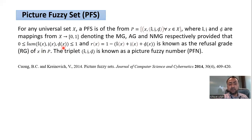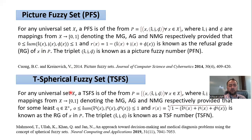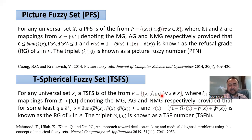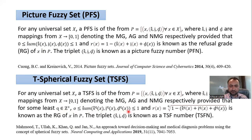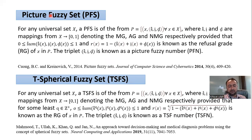To provide more independence, Mahmood et al. proposed two concepts — spherical fuzzy sets and T-spherical fuzzy sets — back in 2019. For any universal set X, a T-spherical fuzzy set has triplets of the form (S, I, D), where S, I, and D denote the membership, abstinence, and non-membership grades respectively. All values must lie between 0 and 1, and the sum of their Q-th powers must lie between 0 and 1, where Q belongs to positive integers. If Q equals 2, the structure reduces to Pythagorean fuzzy sets; if Q equals 1, it becomes picture fuzzy sets. Thus, T-spherical fuzzy sets generalize spherical, picture, Pythagorean, and intuitionistic fuzzy sets.